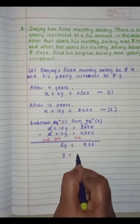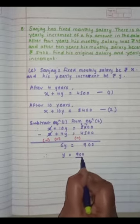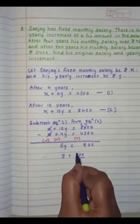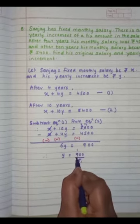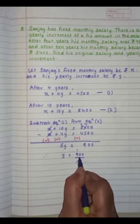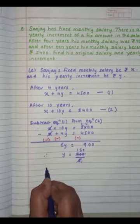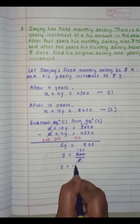Therefore, Y is equal to 900 divide by 6. So 6 ones are 6. 9 minus 6 is 3. 30, 6 fives are 30. So we got answer Y is equal to 150.